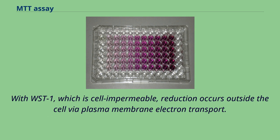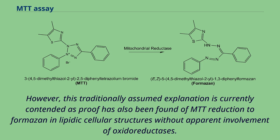With WST-1, which is cell-impermeable, reduction occurs outside the cell via plasma membrane electron transport. However, this traditionally assumed explanation is currently contended, as proof has also been found of MTT reduction to formazan in lipidic cellular structures without apparent involvement of oxidoreductases.